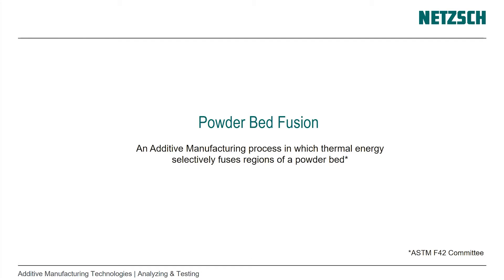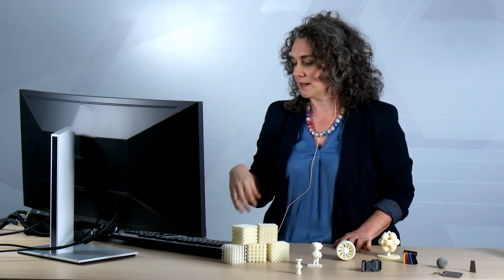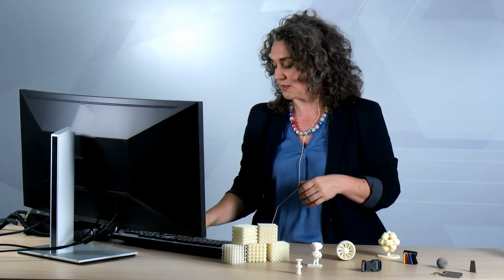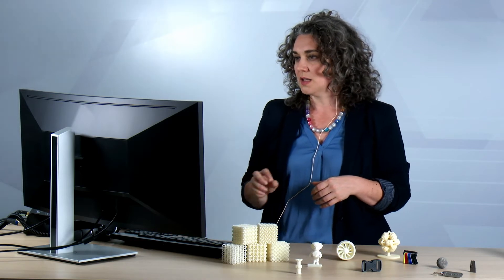First, you might remember that powder bed fusion is defined as a process in which thermal energy selectively fuses regions of a powder bed. We have a powder bed — compared to photopolymerization where we had a vat of liquid resin — and we fuse regions together by melting. In photopolymerization, for example, that was a light-activated curing process, whereas here we have melting and a powder bed instead of a liquid vat.